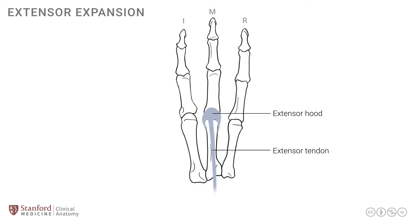This then divides into three slips. The first one of these is known as the middle slip, and it is over the center of the finger and extends up to the base of the middle phalanx, as shown here.